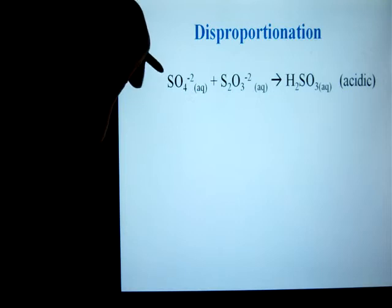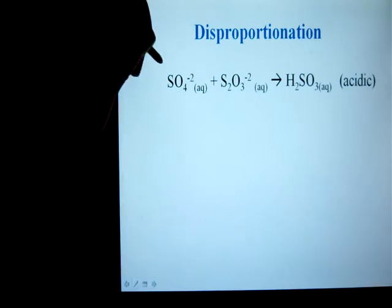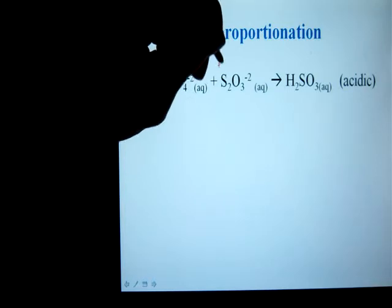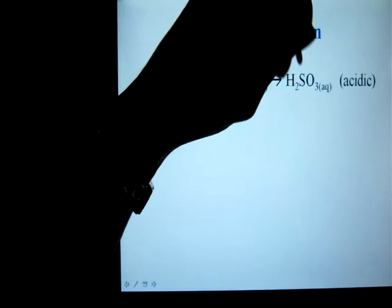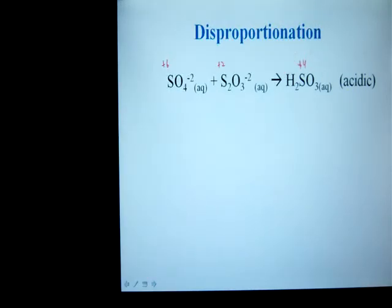So in this case we're dealing with the sulfur. The charge of the sulfur in sulfate is plus 6. The charge of this sulfur ends up being plus 2, and this sulfur ends up being plus 4. And I determine those using my oxidation number rules. You can visit another video if you're unsure of those.